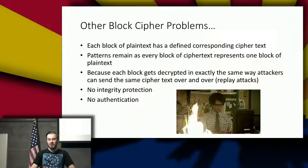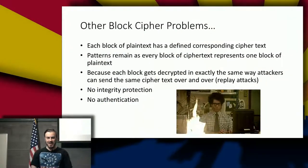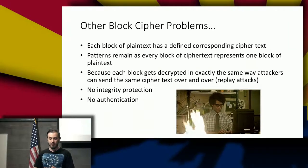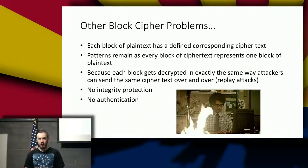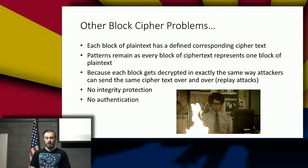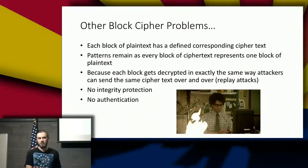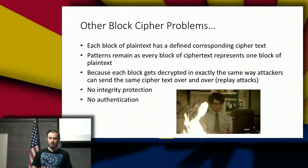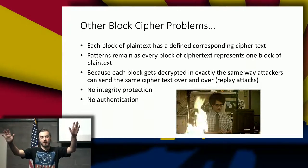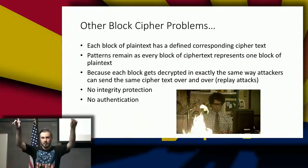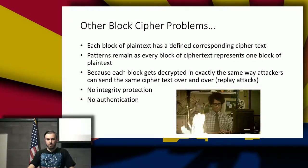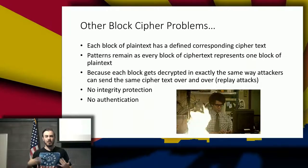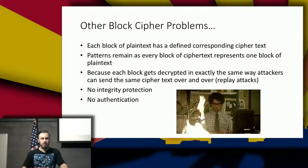Now there are problems with block ciphers. AES and other algorithms have issues as to why we might not use them in certain things. Each block of plain text has a defined corresponding cipher text, which is deterministic. The same word with the same key will always produce the same cipher text. If you have two identical documents and use the same key on them, they're always going to produce the same cipher text. If you stumble upon that — you know the key and the document data — you can decrypt any of those same things.